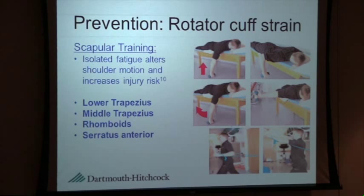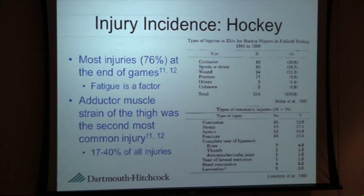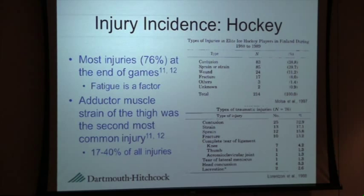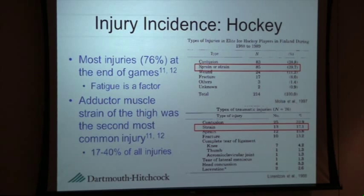Switching to ice hockey — when we study this population, we see that most injuries are actually sustained at the end of games. This is actually a relatively low-injury-risk sport, with a lower incidence of injuries than soccer. Most injuries are contusions or bruises, consistent with the type of sport. The second most common injuries are sprains or strains, and we're going to focus on adductor muscle strains — the inside muscle of the thigh — which account for 17 to 40% of all hockey injuries.